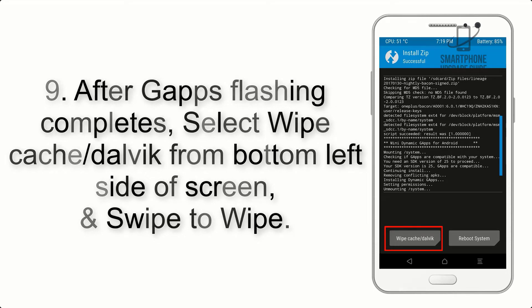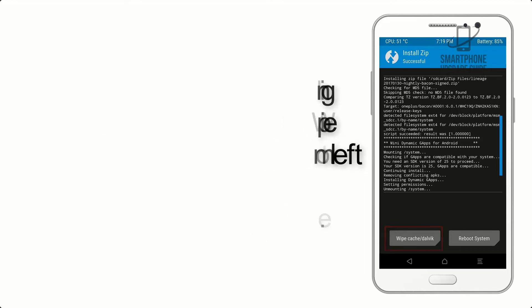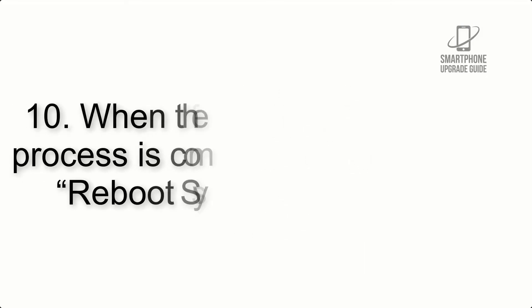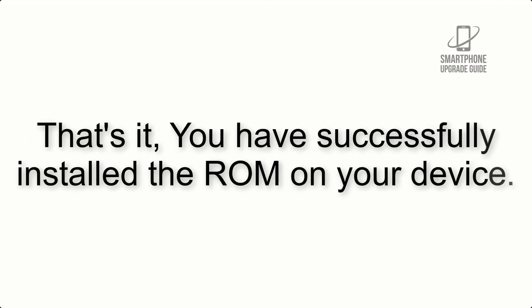Step 8: Flash the GApps zip package in the same manner. Step 9: After GApps flashing completes, select Wipe Cache and Dalvik from the bottom left side of the screen and swipe to wipe. Step 10: When the flashing process is complete, hit Reboot System. That's it — you have successfully installed the ROM on your device.